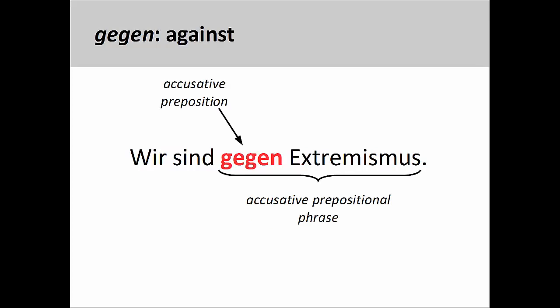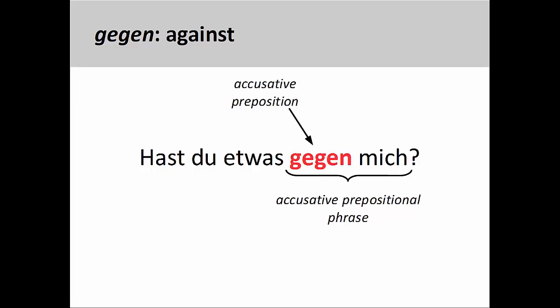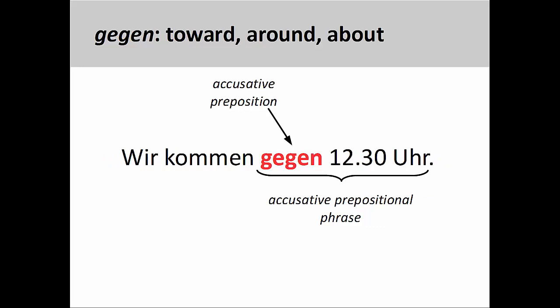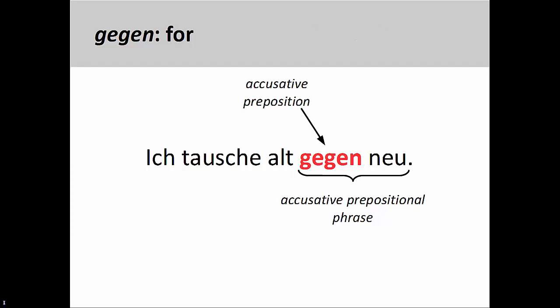The preposition gegen has many meanings. It can mean 'against' an idea, as in 'Wir sind gegen Extremismus' — we are against extremism — or against a person, as in 'Hast du etwas gegen mich?' — do you have something against me? Here, the first person singular accusative personal pronoun mich is the object of the preposition. Gegen can also mean 'against' in the sense of a physical object, as in 'Sie wirft den Ball gegen die Wand' — she throws the ball against the wall. Gegen is also used to express 'toward,' 'around,' or 'about' in time expressions, such as 'Wir kommen gegen zwölf Uhr dreißig' — we're coming about 12:30 p.m. And gegen can mean 'for' in an exchange, as in 'Ich tausche alt gegen neu' — I am trading in the old for the new.